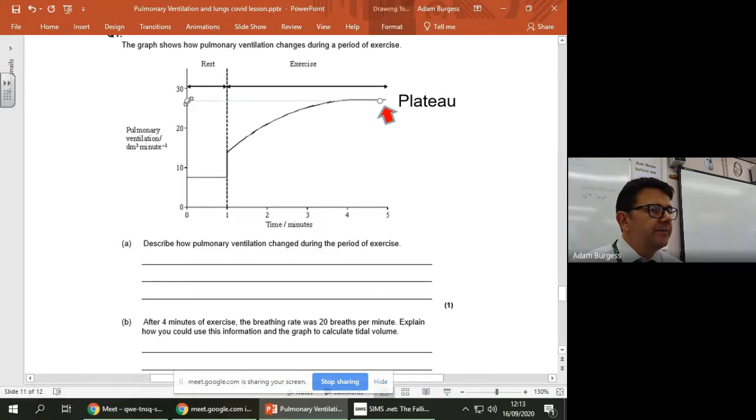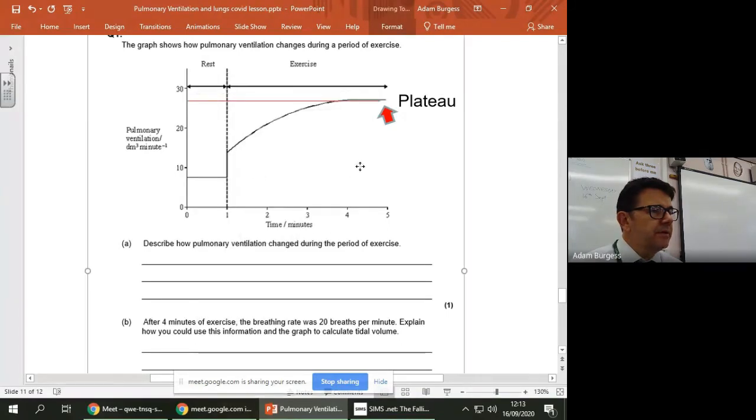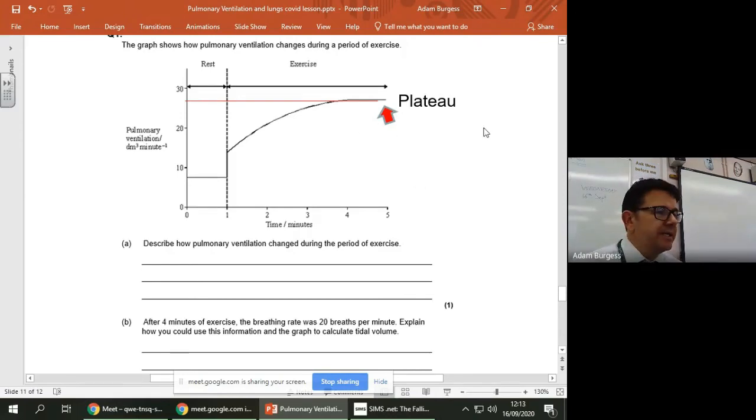So we can kind of work that out. There we go. Okay, so pulmonary ventilation, I'm going to say, was around about 27, 28. It doesn't matter too much, so they usually give a range of data. So I'm going to say pulmonary ventilation was 27 DM cubes per minute.